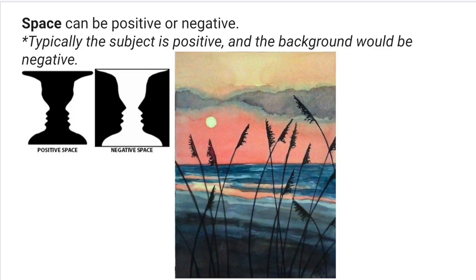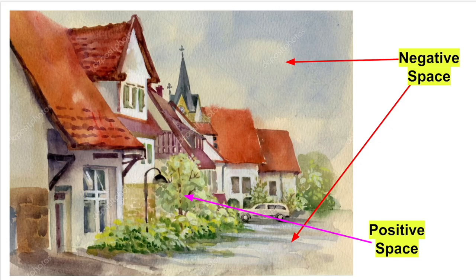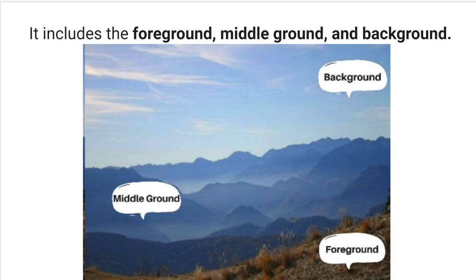One strategy is positive and negative space. Typically, the subject is positive and the background would be negative. In this example, the buildings are positive and the sky is negative.